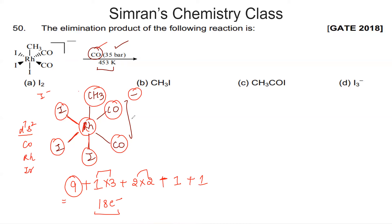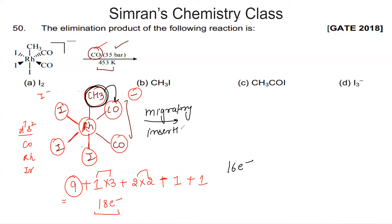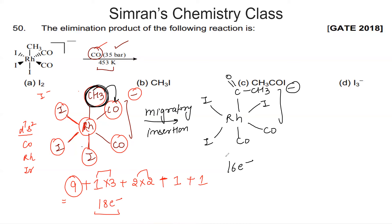To create a 16-electron space, CH3 undergoes migratory insertion into one CO ligand. After migratory insertion, we have an acetyl group COCH3 with a vacant coordination site. The complex now has Rh, three iodines, two remaining carbonyls, and the COCH3 group with negative charge. Counting electrons: 9+3+4+1+1 = 16 electrons — creating the vacant site.